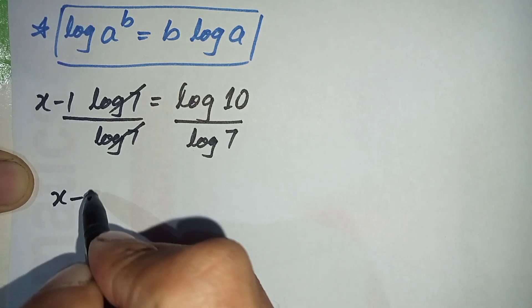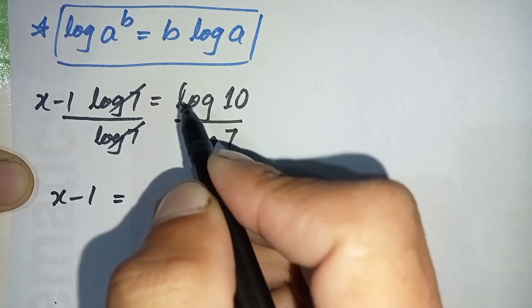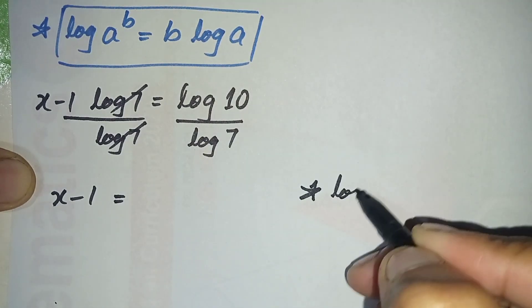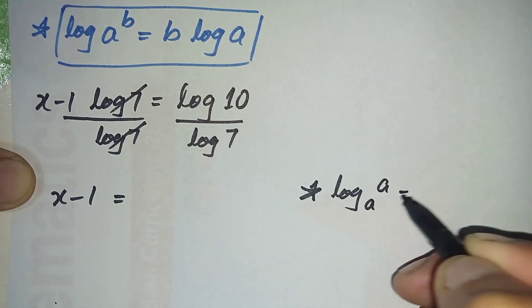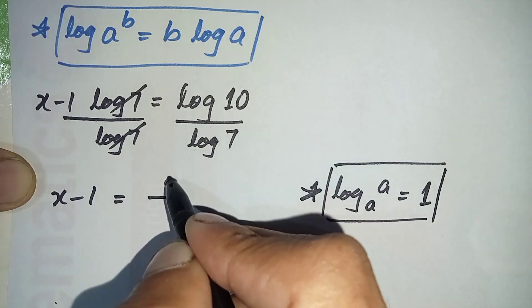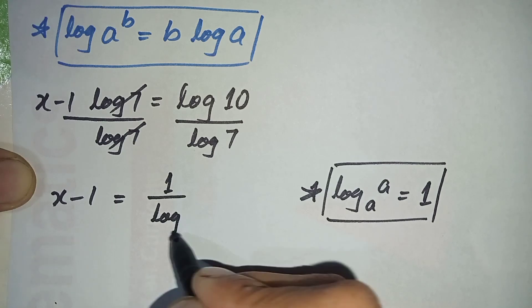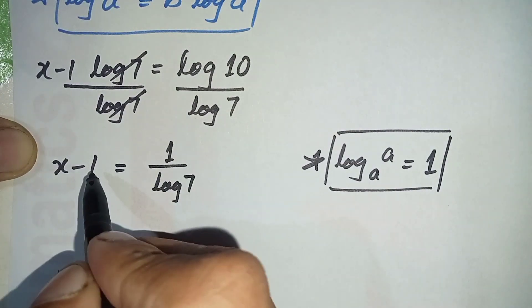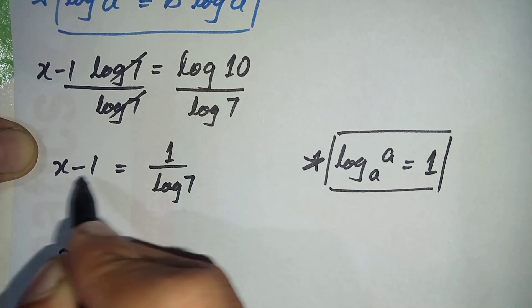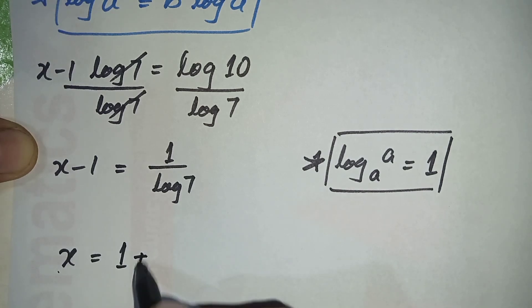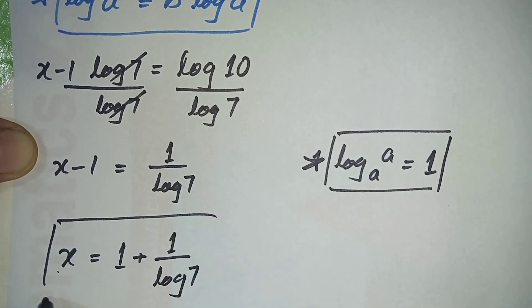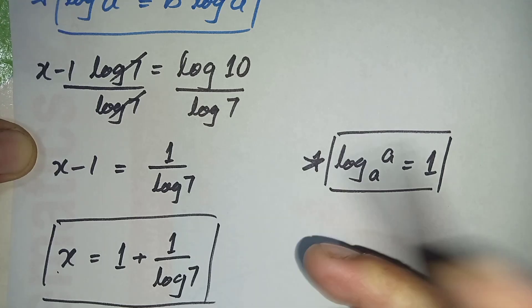So only x minus 1 is left on the left hand side. On the right hand side, log of 10 with base 10 is a common log, and we know that the log of any number with the same base is always equal to 1. So we replace log of 10 with 1, giving 1 over log of 7. Then we shift minus 1 to the right hand side, where it becomes plus 1. So x equals 1 plus 1 over log of 7, which is the answer to this exponential math problem.